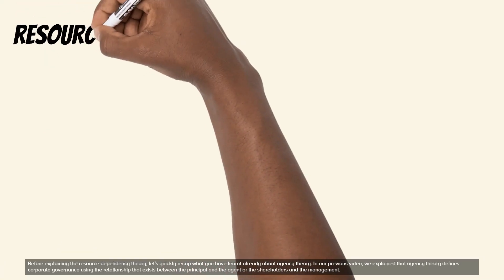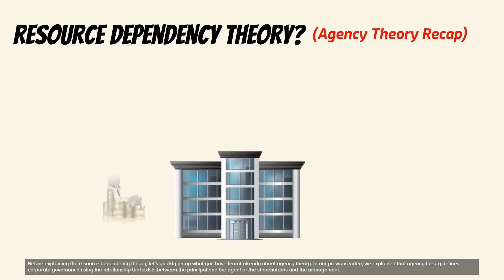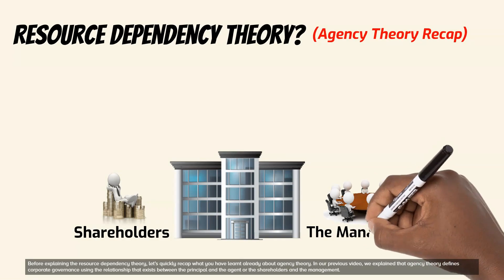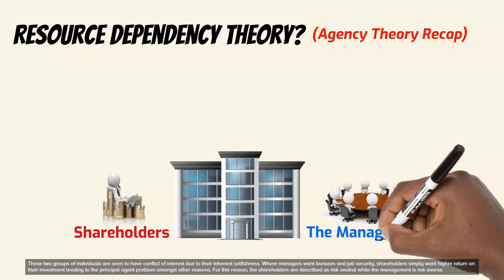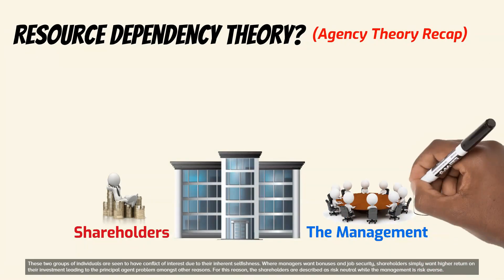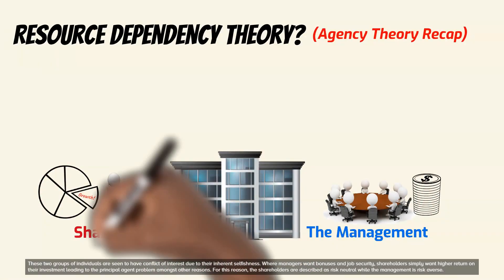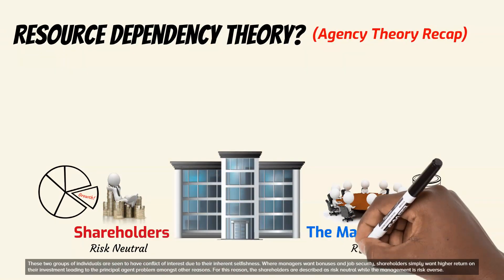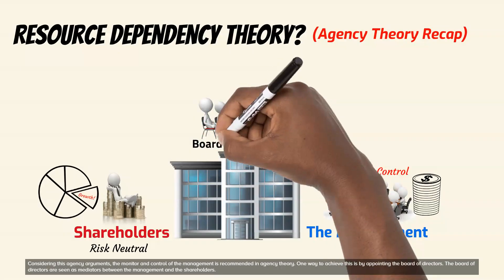Before explaining the resource dependency theory, let's quickly recap what you have learned already about agency theory. In our previous video, we explained that agency theory defines corporate governance using the relationship that exists between the principal and the agent, or the shareholders and the management. These two groups are seen to have conflict of interest due to their inherent selfishness — where managers want bonuses and job security, shareholders simply want higher return on their investment, leading to the principal-agent problem. For this reason, shareholders are described as risk-neutral while management is risk-averse, and monitoring and control of management is recommended. One way to achieve this is by appointing the board of directors.